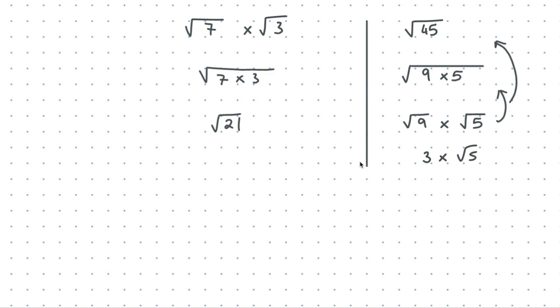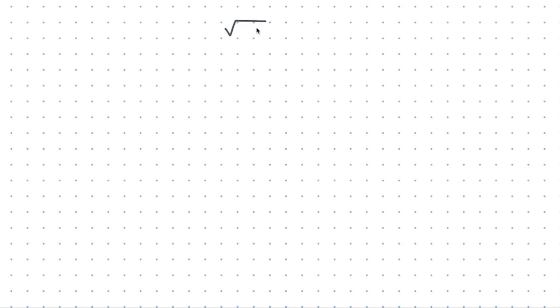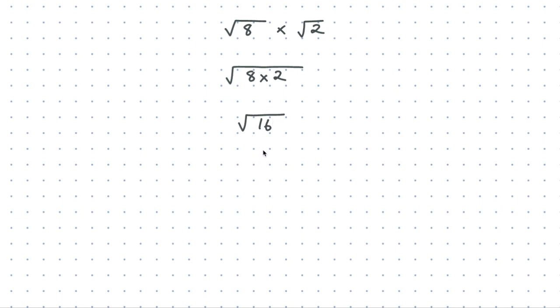Let's do two more examples. What if I had root 8 multiplied by root 2? You can write it as one big square root: the square root of 8 by 2, which is the square root of 16. That doesn't work out to be a surd — it works out to be a rational number. That number is 4.